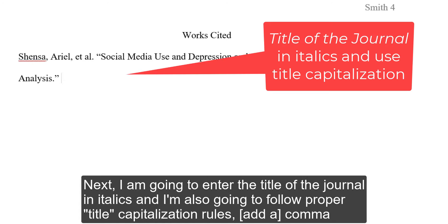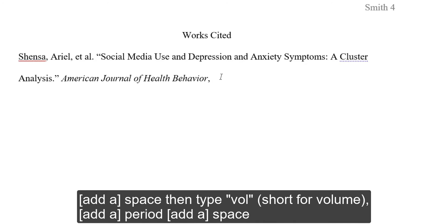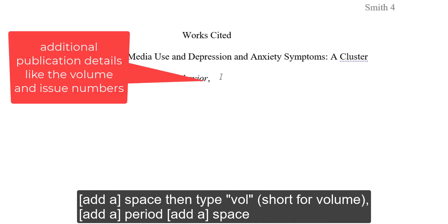Next, I am going to enter the title of the journal in italics, also following proper title capitalization rules. After the journal title, type a comma, then type 'vol.' — short for volume — followed by a space.